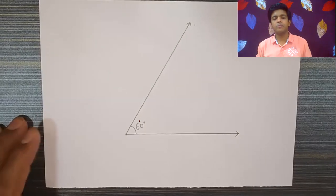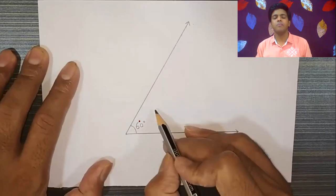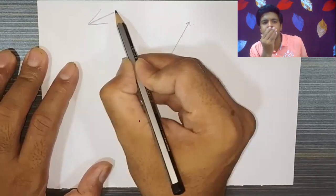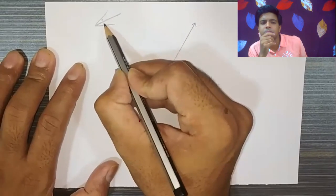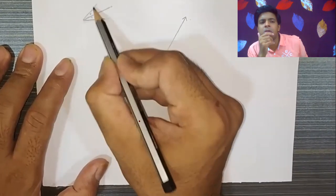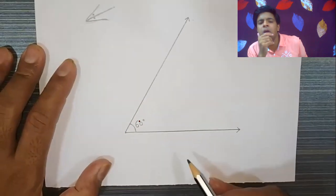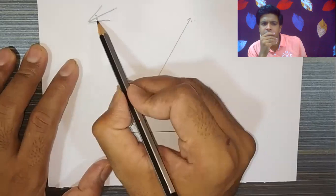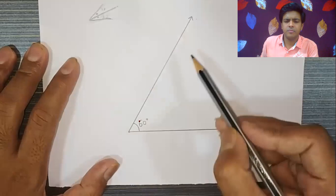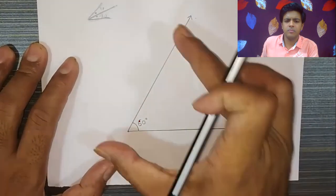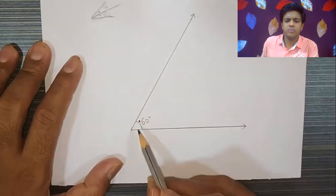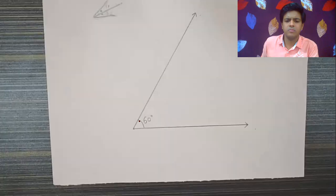Question: construct an angle bisector to obtain 30 degrees. To obtain 30 degrees, first construct a 60 degree angle. What do we do with the 60 degree angle? We bisect it. It is simple — bisect 60 degrees using a low protractor.